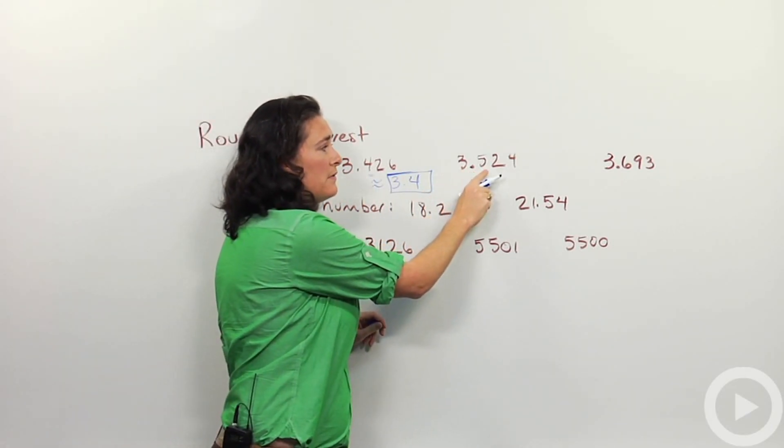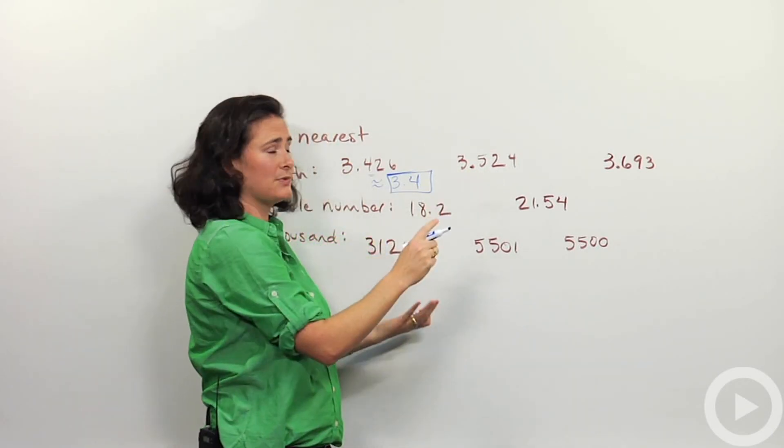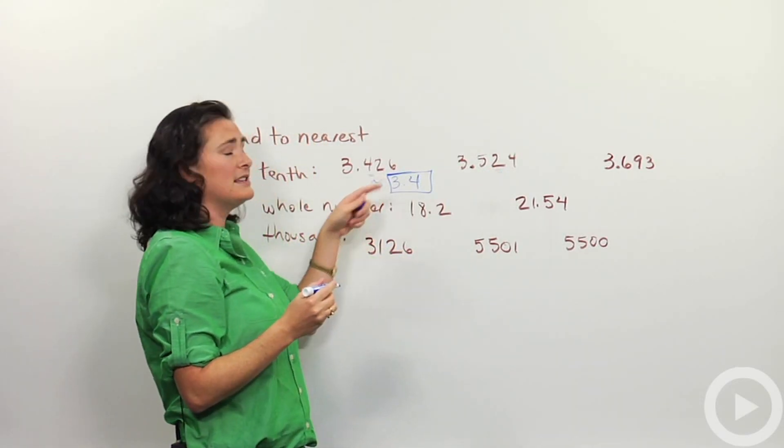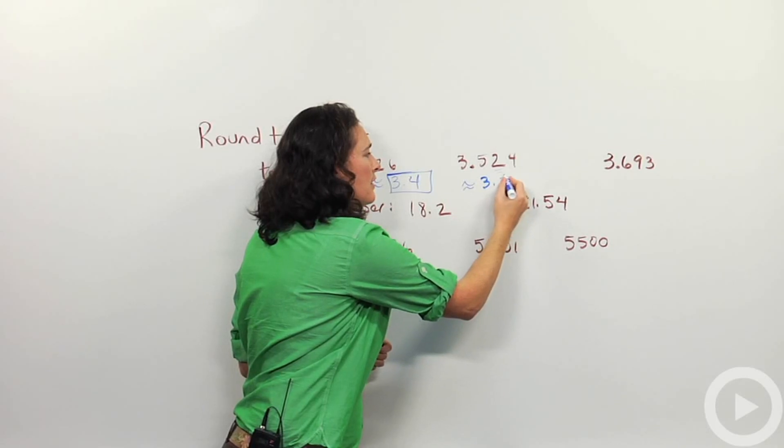The next one, three point five two. That five is either going to stay as a five, or it might be three point six. We have to decide based on the two. Well, the two there, again, is between zero and four. So this will be approximately three point five.